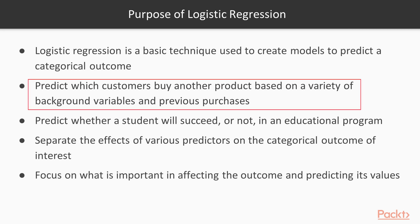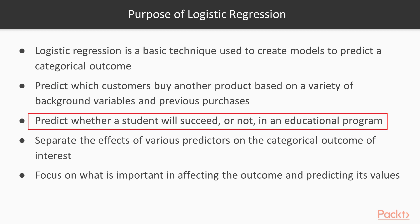For example, we might use logistic regression to help us predict which customers are going to buy a product based on a variety of background variables or previous purchases. Or we might be trying to predict student success — for example, whether they're going to pass or fail, or graduate or drop out from an educational program.